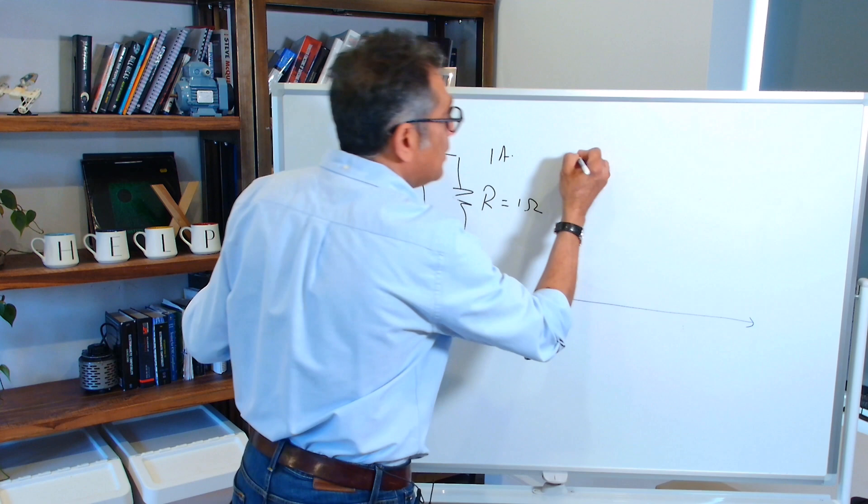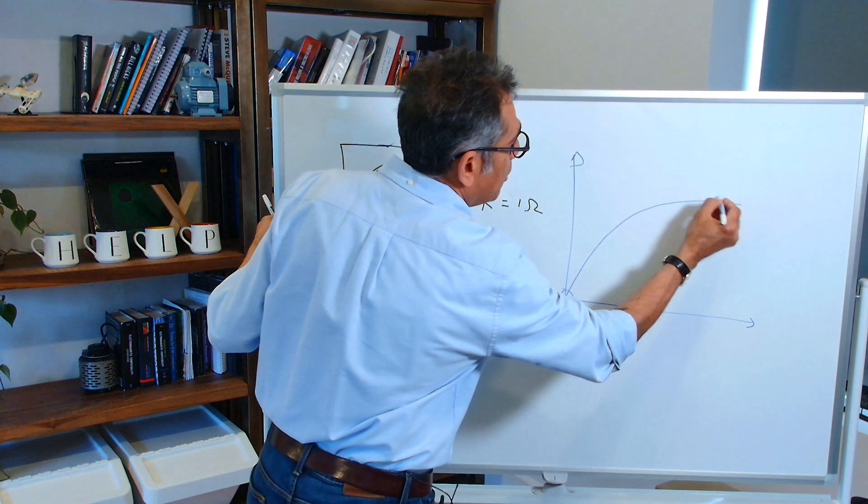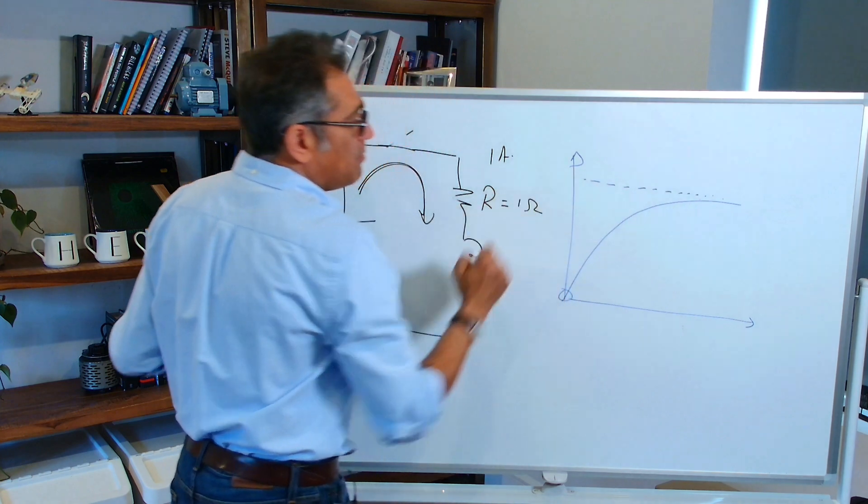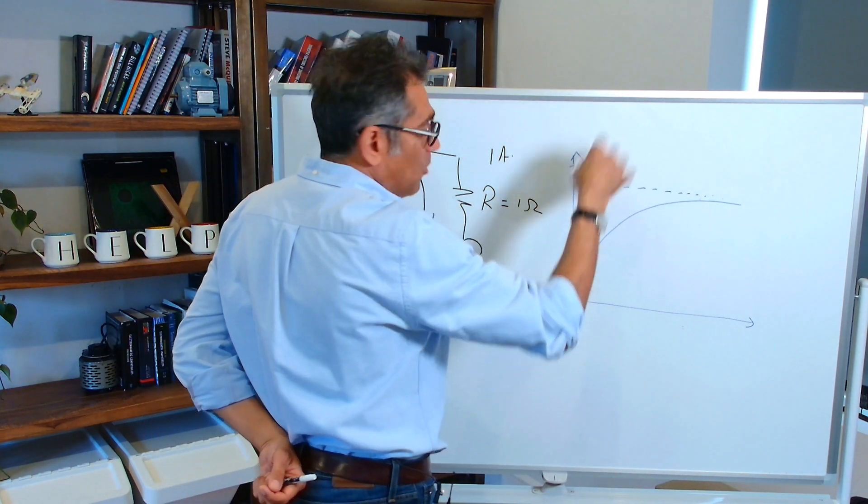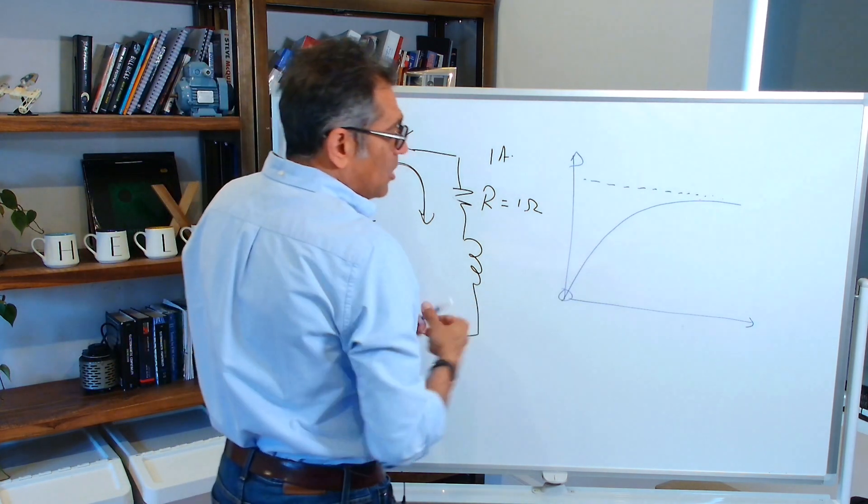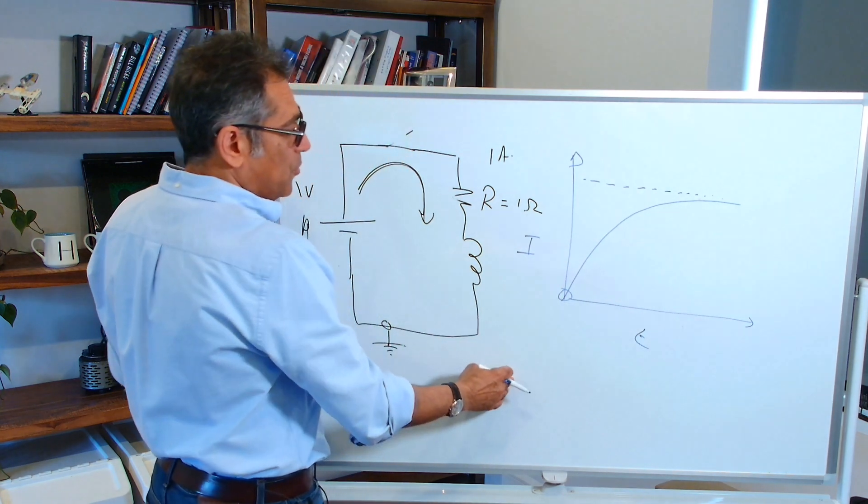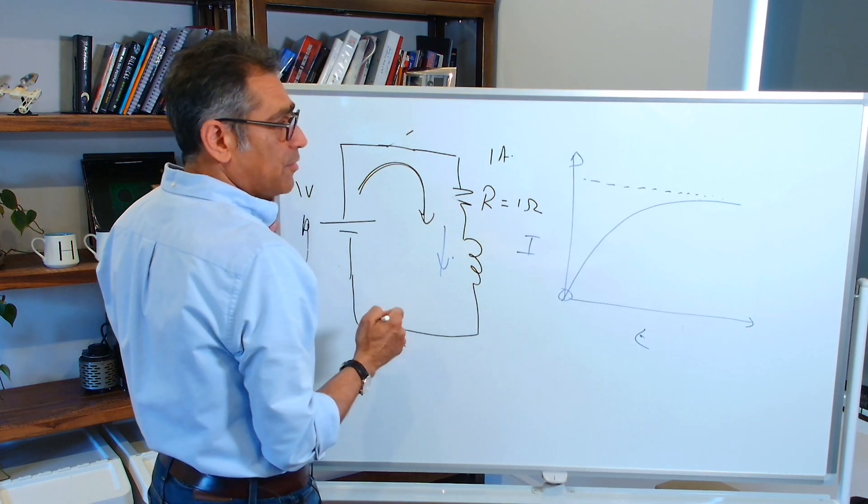You get a current that rises in the inductor in a logarithmic manner. And I won't go through the equation because this unnecessarily would complicate stuff. So this is your current, this is time, this is current through here, through the inductor.